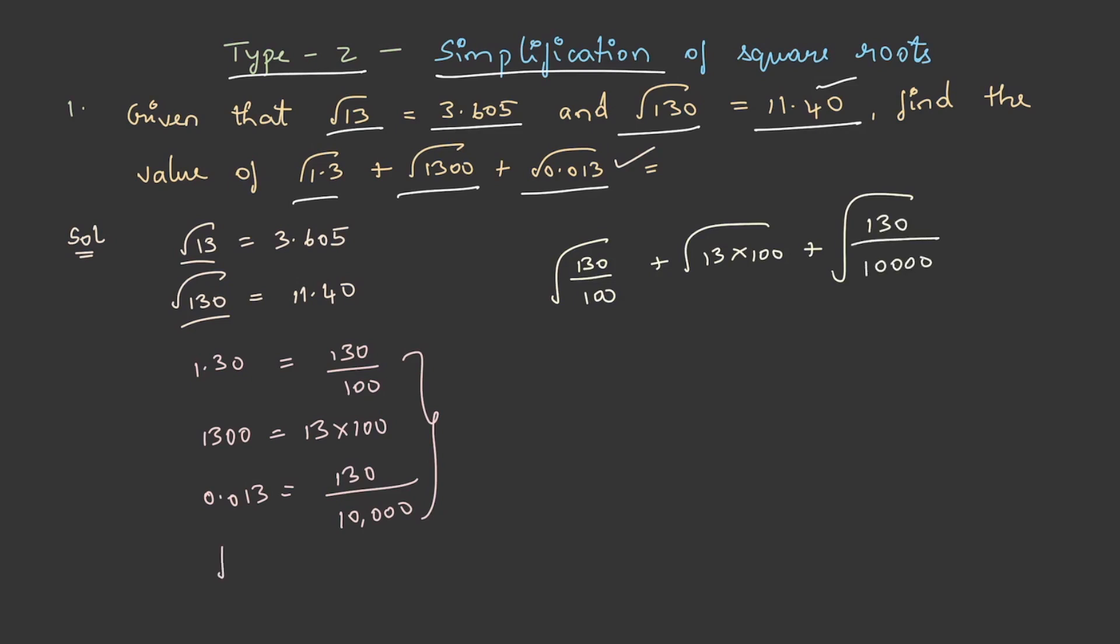From this, √100 = 10. We all know this. This equation becomes √130/10 + √13×10 + √130/100.